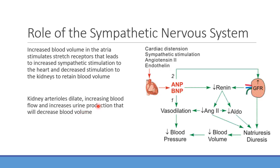When the atria stretch, the response is: pump blood out harder, and make more urine to reduce volume — a process called diuresis. Diuresis has a negative effect on blood volume and blood pressure. As volume drops, atrial stretch decreases, sympathetic activation falls back down — this is the negative feedback loop at work.